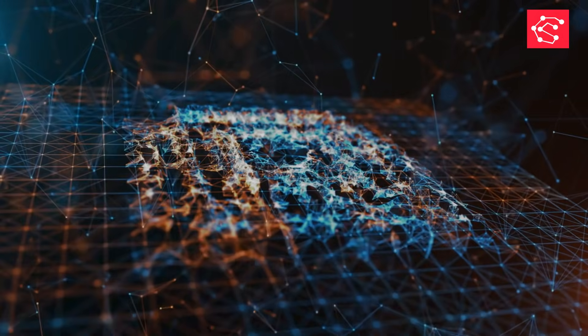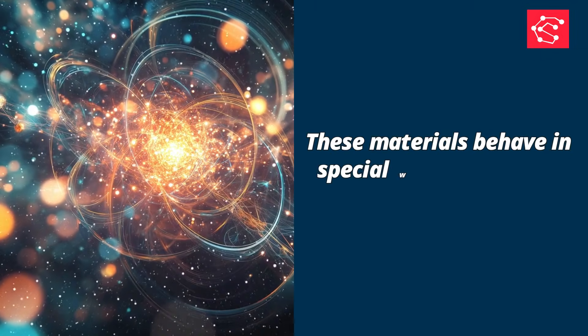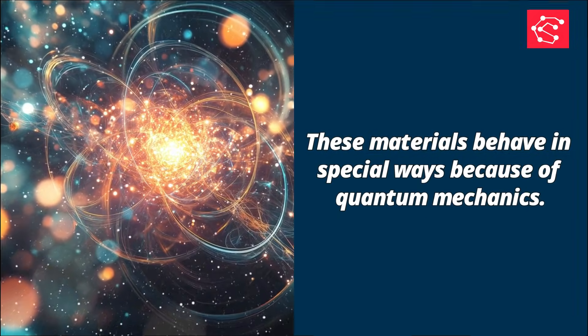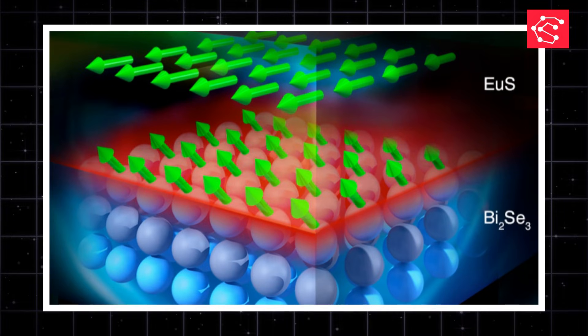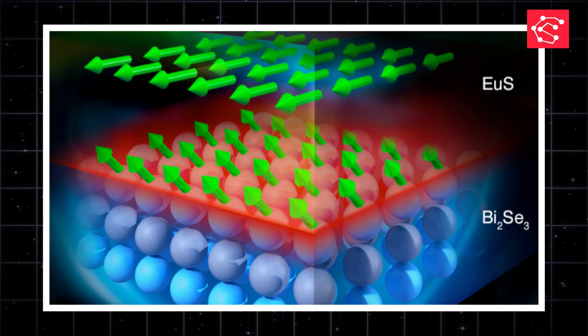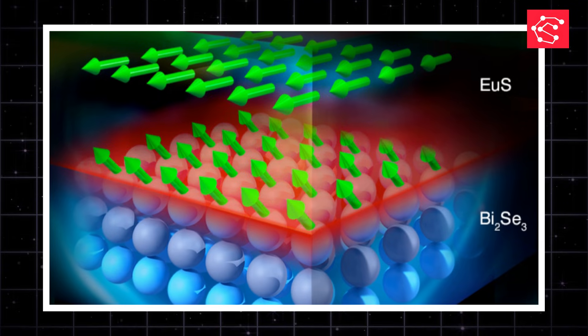Let's start with quantum materials. These materials behave in special ways because of quantum mechanics. One powerful example is topological insulators such as BI2SE3.